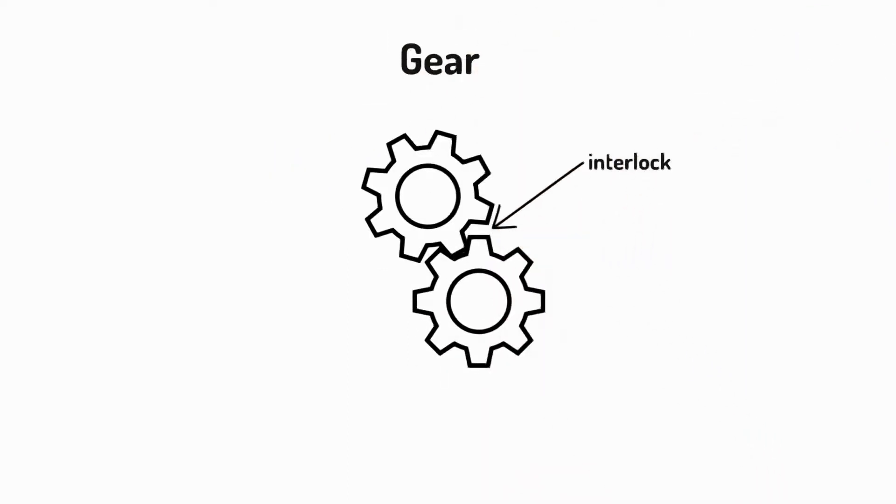Gears have teeth that interlock with each other. This allows one gear to turn or drive another gear. We often use them to help control and change the speed of a machine.